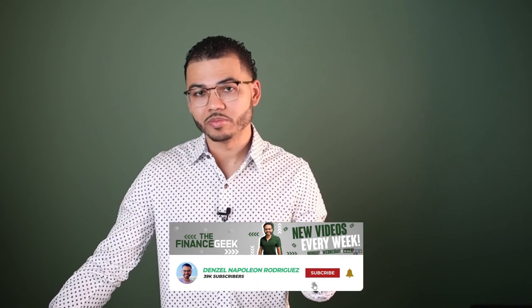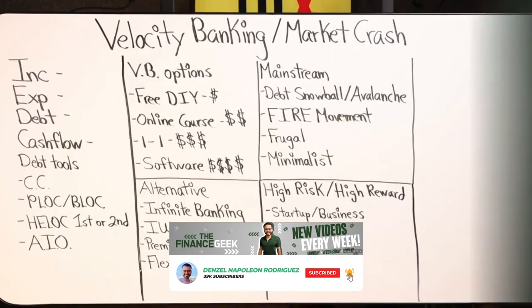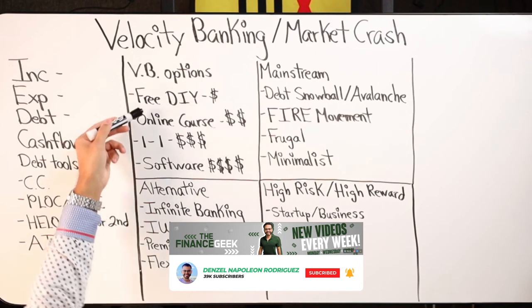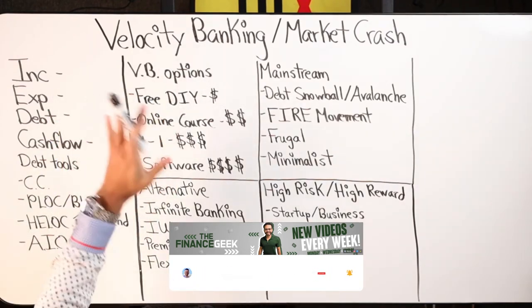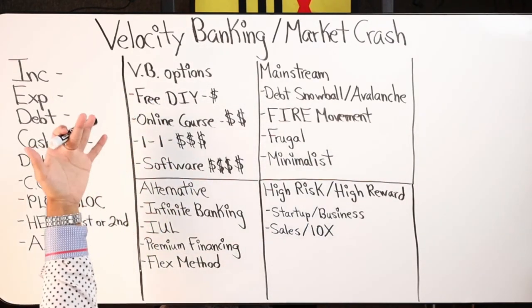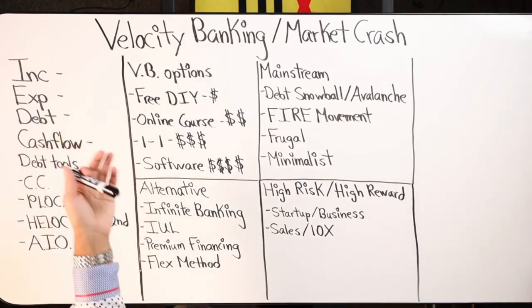So let me just be the first to say in terms of the options that you have when doing velocity banking, you can go the free route. So that's the first one. You can go the free DIY, do it yourself. Cost you little to nothing. What it costs is your time and effort and patience because you got to watch the content.